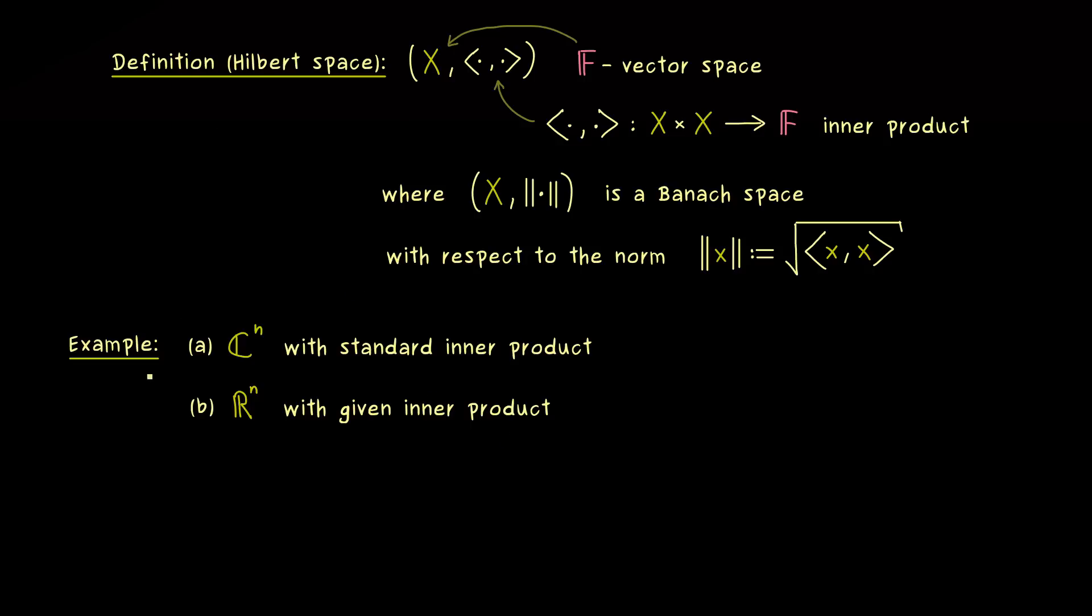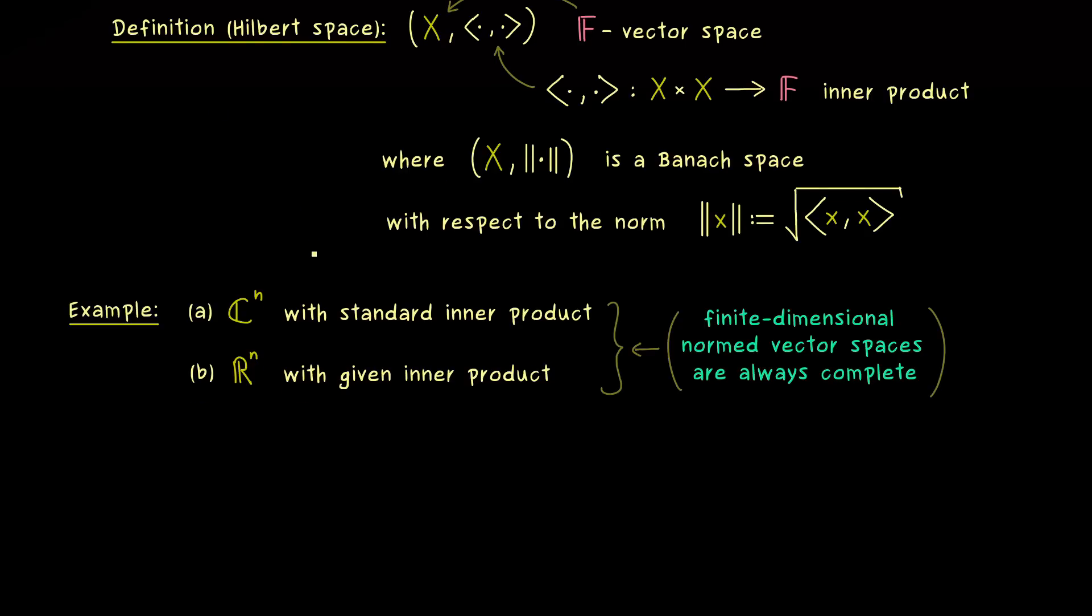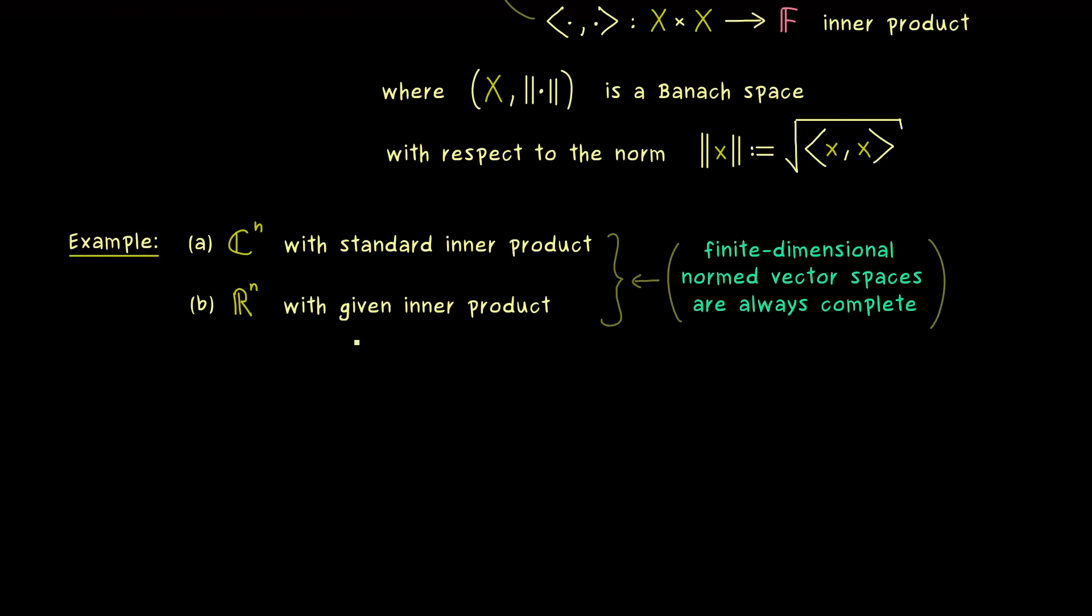Indeed, this is something you can remember. For finite dimensional vector spaces, the completeness property here is not a problem at all. It's easy to show that finite dimensional normed vector spaces are always complete. And this means that in this series here, we are definitely more interested in the infinite dimensional case.